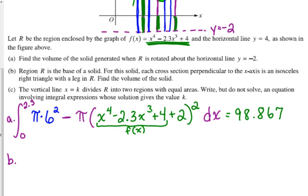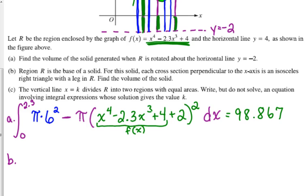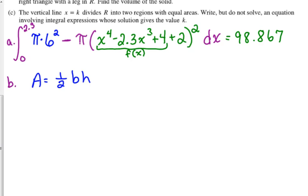Let's look at part B. Part B is what we just did in notes. Region R is the base of a solid. For this solid, each cross-section perpendicular to the x-axis is an isosceles right triangle with a leg in the region R. Find the volume of the solid. So, we've got our region. Our region's already graphed. We need to figure out our area formula for this specific figure.